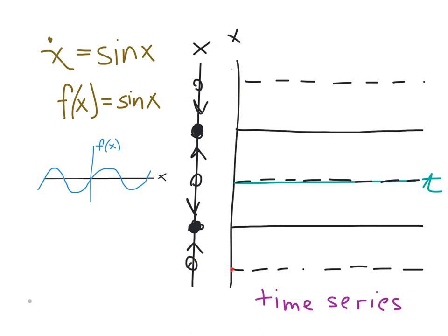Each fixed point corresponds to a location where if I start at the value of x, dx/dt is 0 and I will stay at that value of x for all time. The stable ones I've drawn using solid lines and the unstable ones I've drawn using dashed lines.